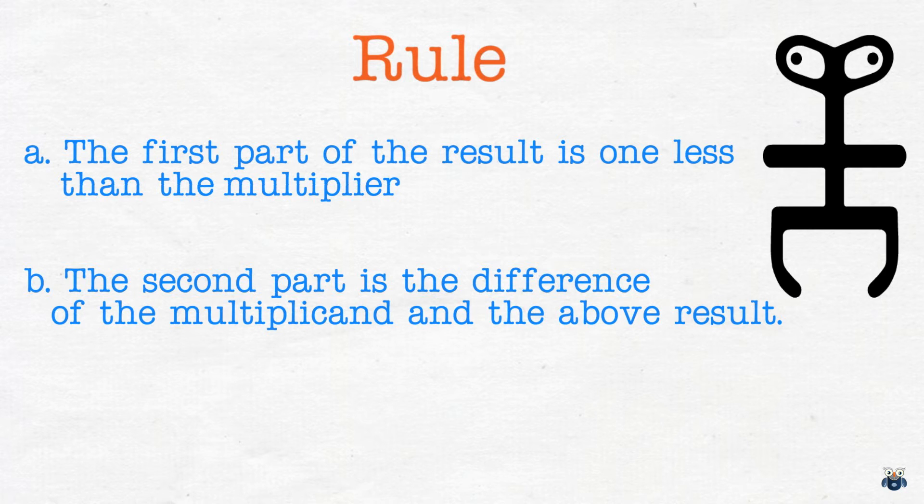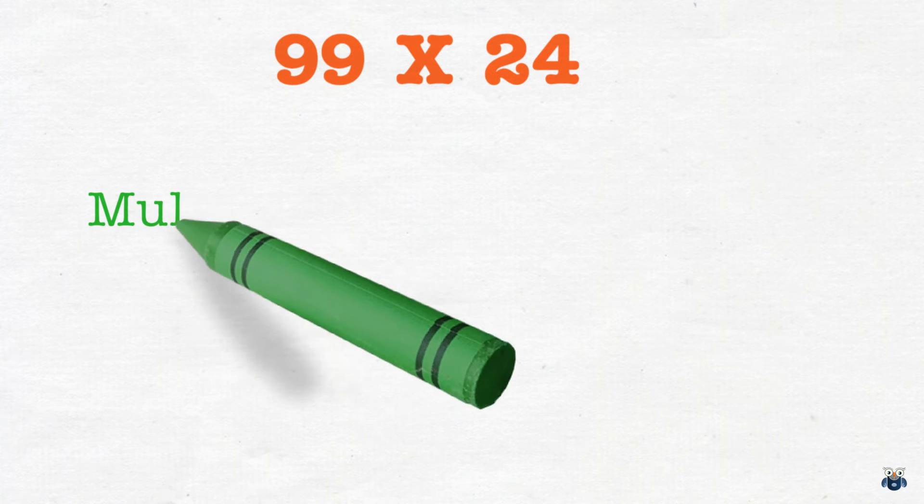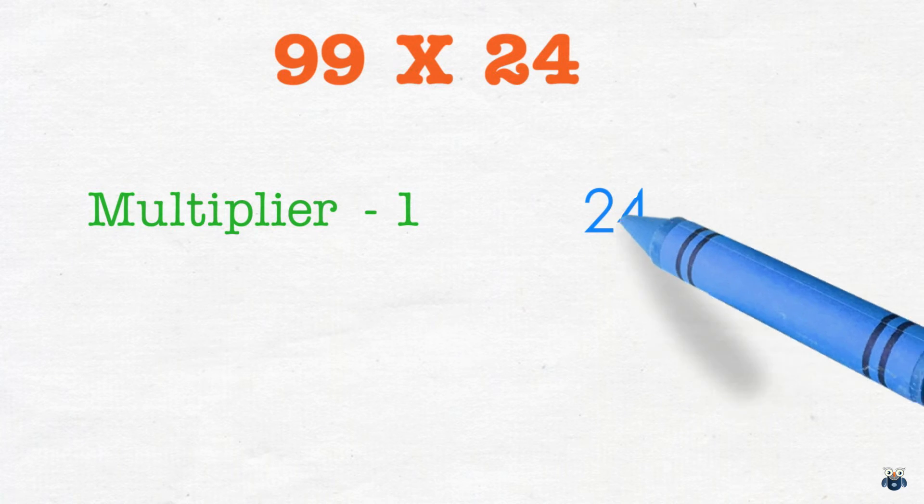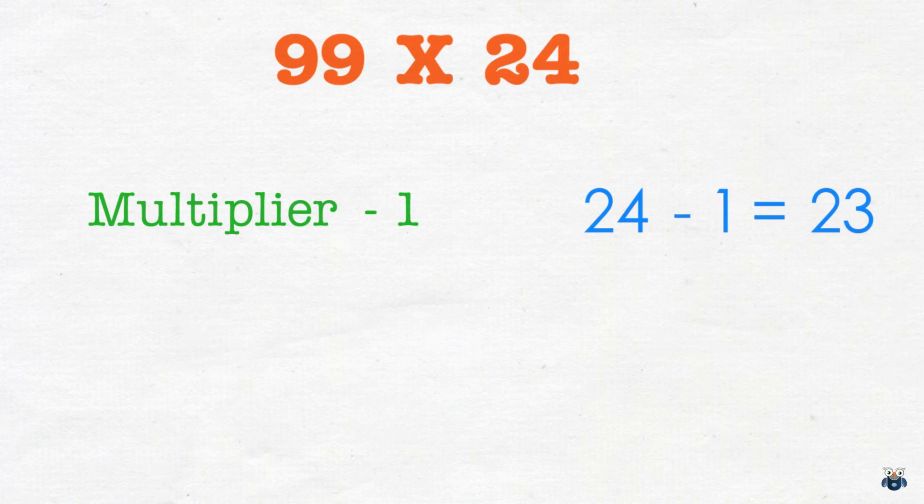But does this pattern work for bigger numbers? Will it for example work in this case? Calculating the result using the conventional method taught in schools is going to be time consuming. So let's see how our method fares. For the first part of the result we reduce the multiplier by 1. The result is 24 minus 1 which is 23.